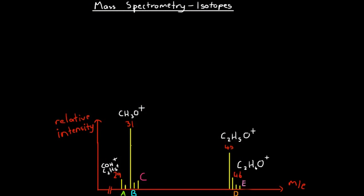One of the other major factors that causes many peaks to come up on our mass spectrum, besides fragmentation, is the fact that we have lots of different isotopes of given molecules.